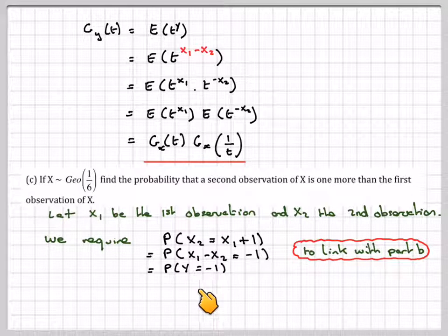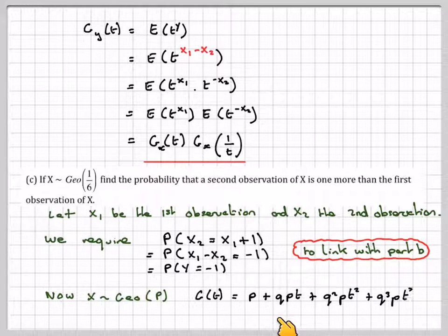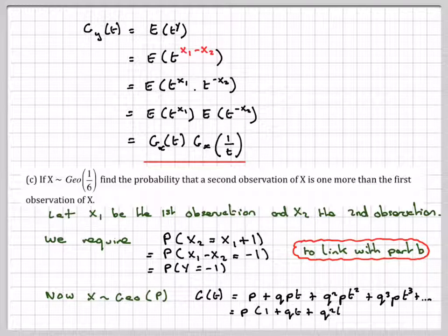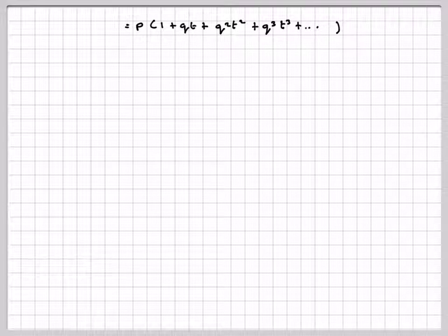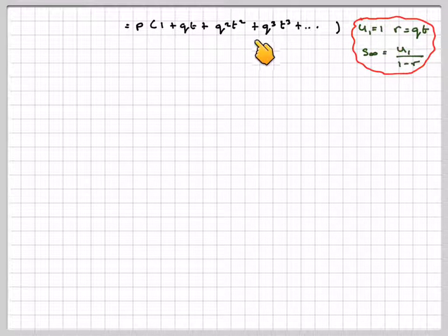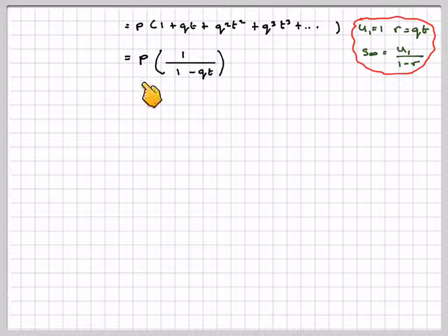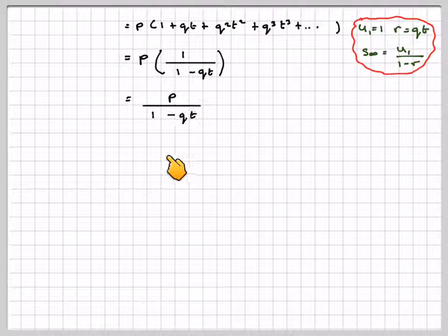So we want P(Y = -1). If X is Geometric(p), then g(t) = p + qpt + q²pt² + q³pt³ + … Taking out p, this is p(1 + qt + q²t² + q³t³ + …). This is a geometric series with first term 1 and common ratio qt, so the sum to infinity gives p/(1 - qt), which is the probability generating function for a geometric distribution.